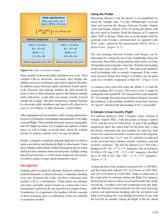Using the plotter: measuring distance is accomplished by using the straight edge. On the Albuquerque sectional chart, measure the distance between Portales Airport (Q34) and Benger Airport (Q54) by setting the plotter with the zero mark on Portales—read the distance of 47 nautical miles to Benger. Make sure to use the sectional scale rather than the WAC scale, otherwise the measurement will be off by a factor of 2. True heading can be determined by aligning the straight edge along the course line and sliding it until the index hole is on a line of longitude; in this case, 48 degrees.